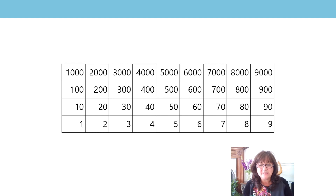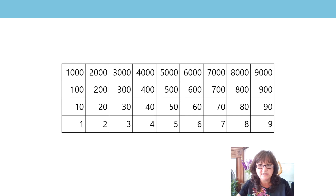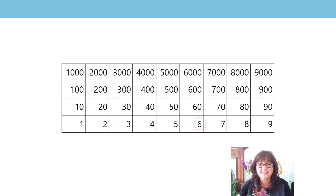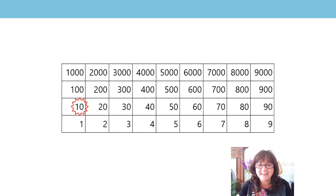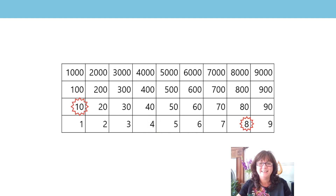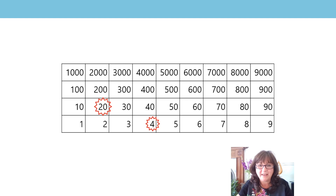Okay, we're going to skip count again but this time we're going to use this special chart. This is a Gatengo chart and it's another way that we can use to help us skip count. So I'm going to start at zero and then we're going to count all the way up to twenty-four again. Zero, two, four, six, eight, ten, twelve, fourteen, sixteen, eighteen, twenty, twenty-two, twenty-four. You're getting so good. Well done.